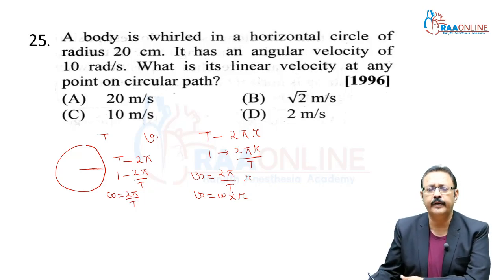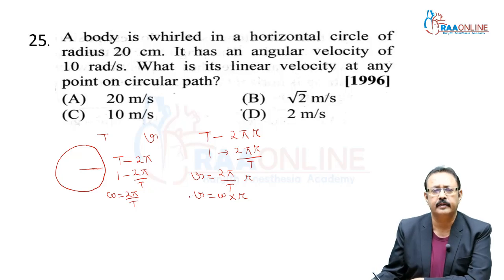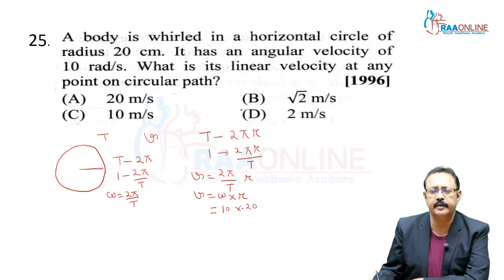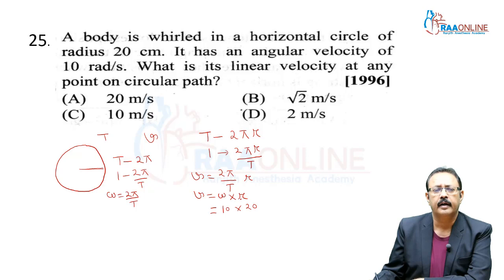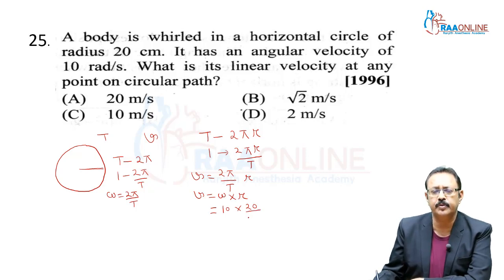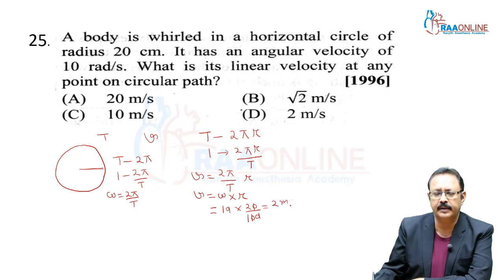Using V = ωR: ω = 10 rad/s, R = 20 cm = 20/100 = 0.2 m. So V = 10 × 0.2 = 2 m/s. We are going with option D.